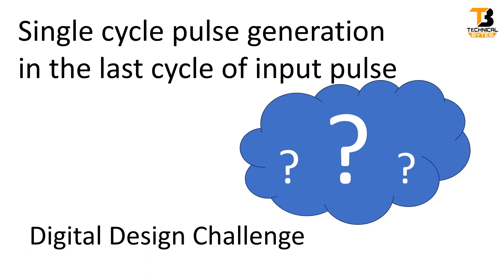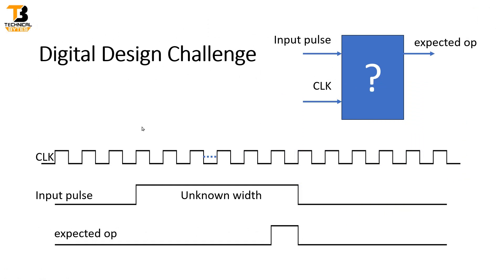Now let us see what the technical problem is: you have to generate a single cycle pulse in the last cycle of the input pulse. Let us try to understand this problem statement with the help of waveforms. I am asking you to design a logic diagram for this particular design — it has two inputs: clock and input pulse, and this is the expected output.